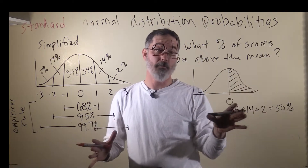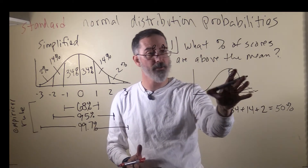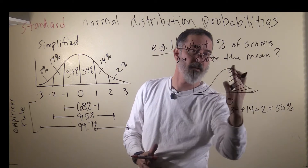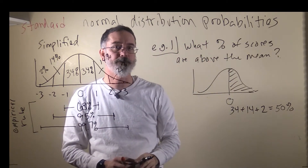You add those together and you get 50%. So half of the scores in this distribution are above the mean, which is not at all surprising, because this is a normal distribution and it is symmetrical. So half the scores have to be above and below the mean.